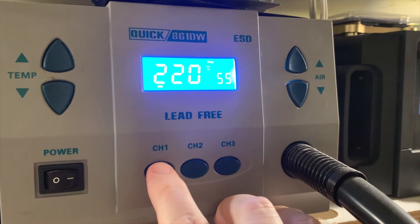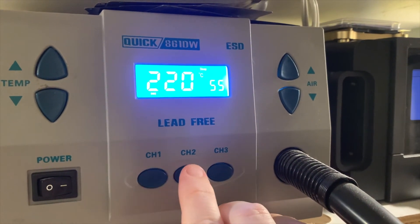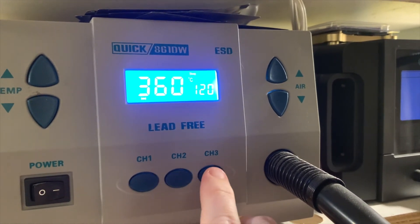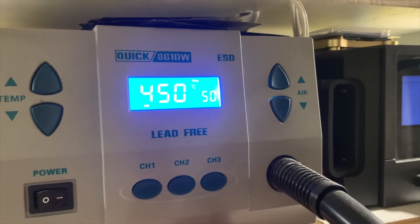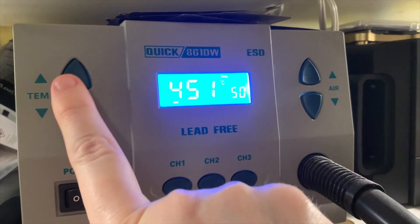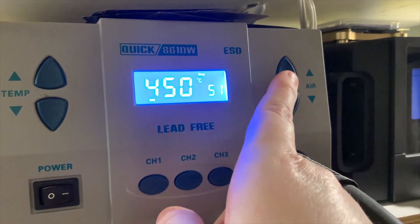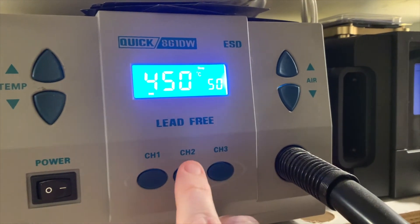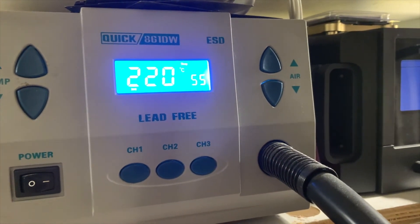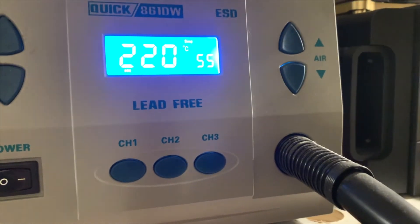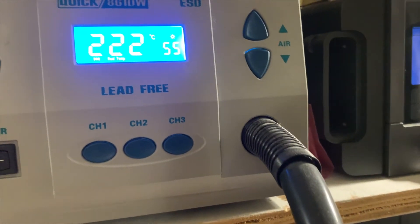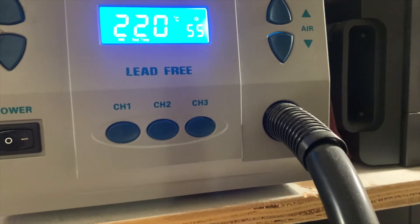All the hot air stations that are made by Quick and pretty much any other ones really, Chinese manufactured ones, have the same buttons layout. So you have temperature on the left, air on the right and you have three channels. To put it in calibrate mode, you want to hold channel one and three. So it's pretty much exactly the same method as the other one.